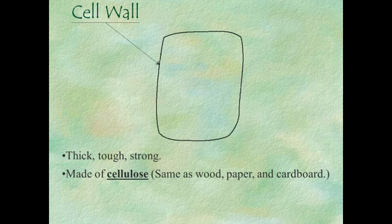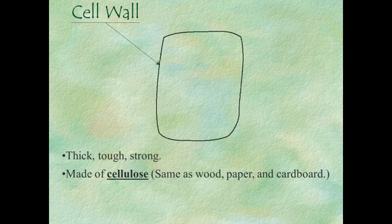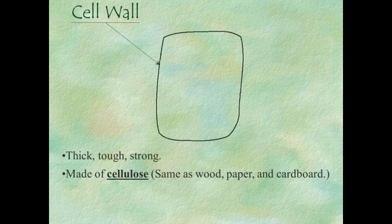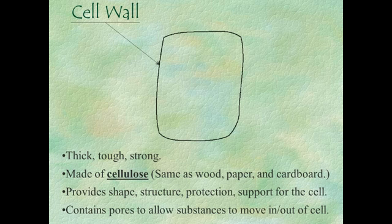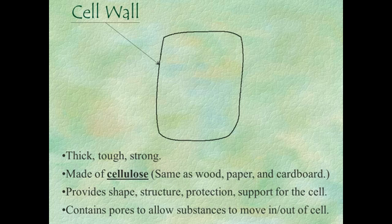Cellulose is made from glucose monomers, and you can probably reach out and touch many things that are made from cellulose. Anything made of wood, paper, or cardboard that you come in contact with is made of cellulose. This is the material that plant cell walls are made of. It provides shape, structure, protection, and support for the plant cell. Since it is a fairly tough material, it has to have holes in it that allow substances such as water and nutrients to move in and out of the cell.